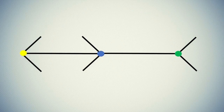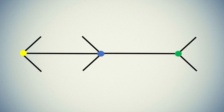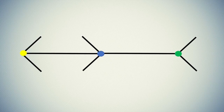I want you to look at this line. In the middle you can see a blue dot. On one end, a yellow dot. On the other end, a green dot. Now I want to ask you a very simple question: is the blue dot closer to the yellow one, or to the green one?